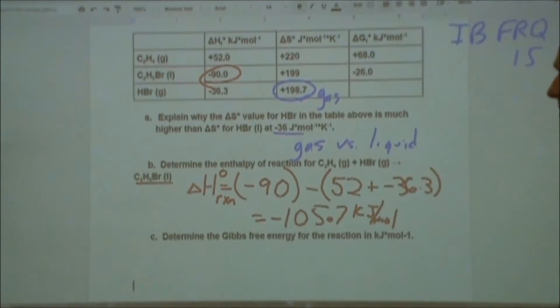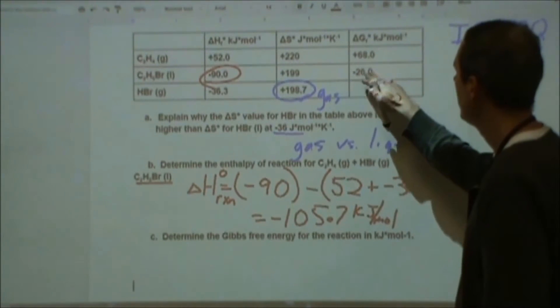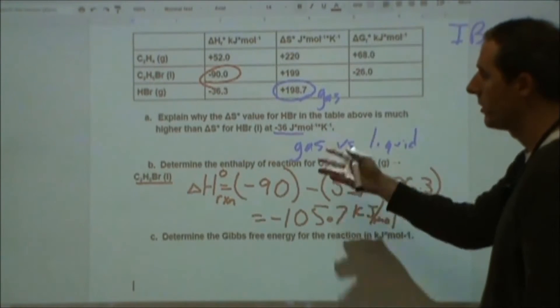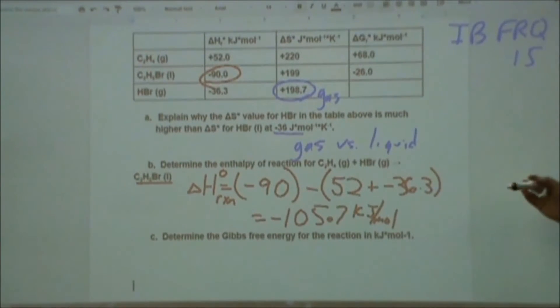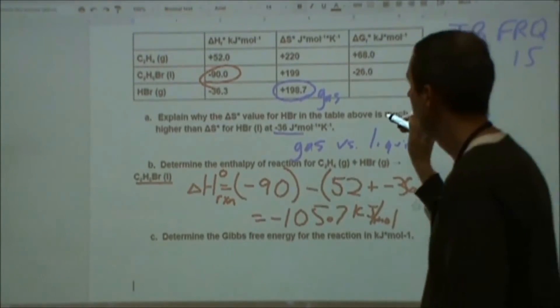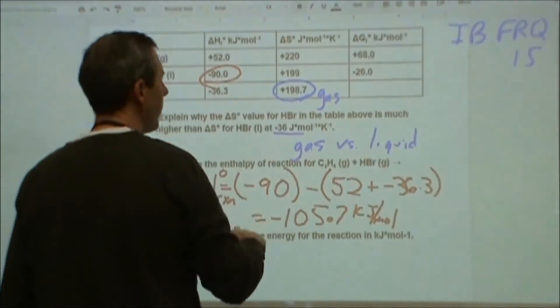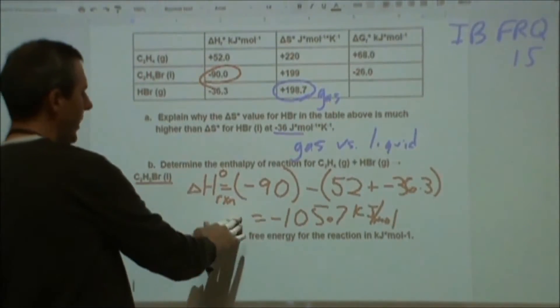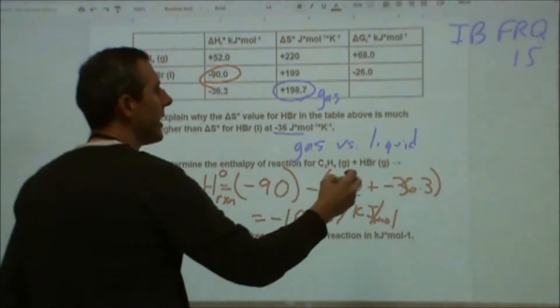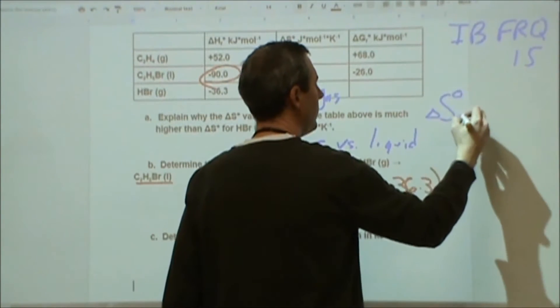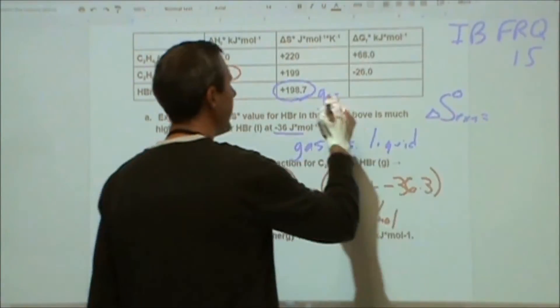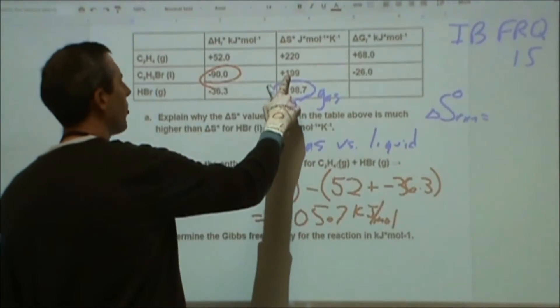Then part C asks us to determine the Gibbs free energy for this reaction in kilojoules per mole. So if we had had the values here for the Gibbs energy of formations, we could have just done the same thing we did for part B. But we're missing one. We're missing the hydrobromic acid. So what we're going to do is the same thing but for the entropy values. So we have our enthalpy of reaction. What we need now is the entropy of reaction.